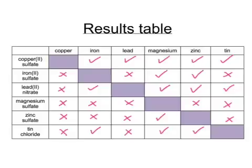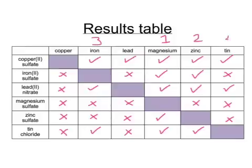These typical results show that magnesium has reacted with all of the other solutions, because magnesium is the most reactive of these metals — it's able to displace the metal from each of the solutions of their salts. So when magnesium is added to copper sulfate, for example, it forms magnesium sulfate and copper is displaced. By looking at the number of ticks, we can see that zinc is the second most reactive, followed by iron, then tin and lead, and copper is the least reactive of these metals.